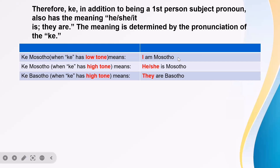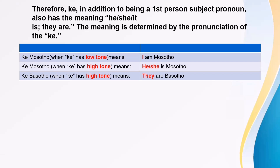So we have "I am Musutu" — we're going to focus on the highlighted pronouns. "Ki Musutu" — when "ki" has a low tone, that means I am referring to myself. But if I'm referring to someone else, "he or she is Musutu," it is going to be "ki" with a high tone — "Ki Musutu." The ki has a high tone because I am referring to someone other than myself. And "they are Basutu" — the tone is going to be high: "Ki Basutu."